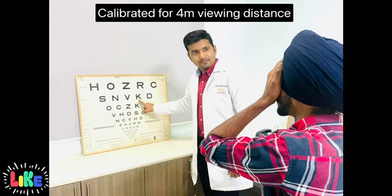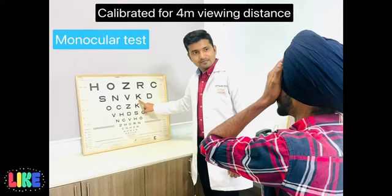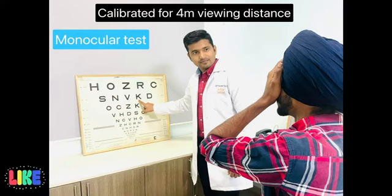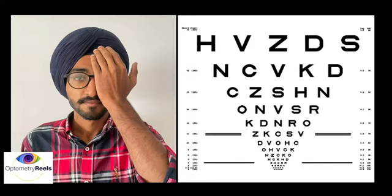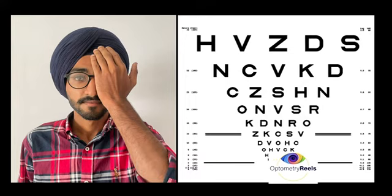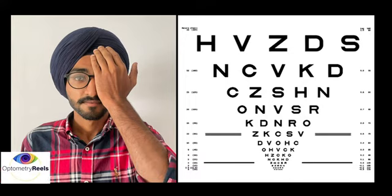In general, the distance LogMAR acuity charts are calibrated for 4 meters of working distance. Since it is a monocular test, hence each eye should be tested separately. You can also perform the test with or without glasses.